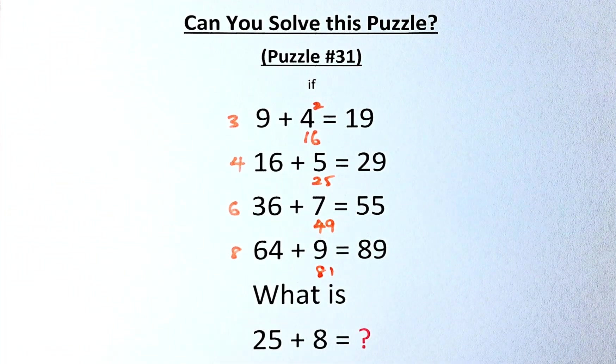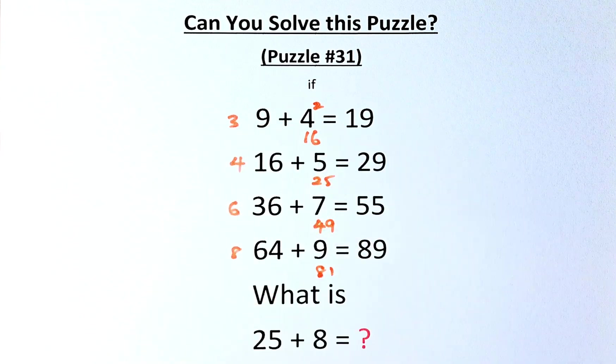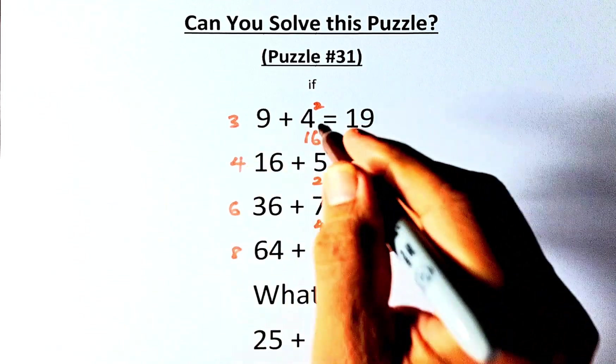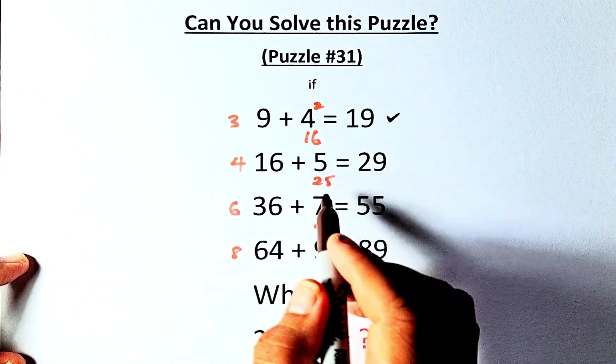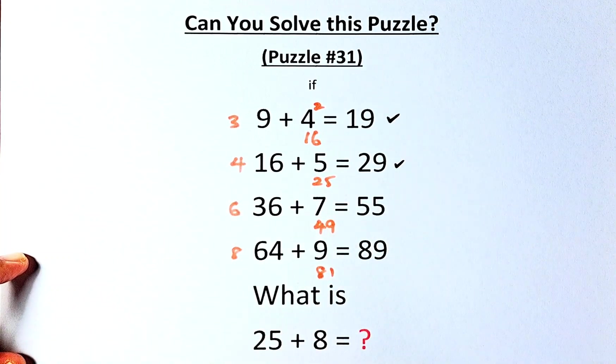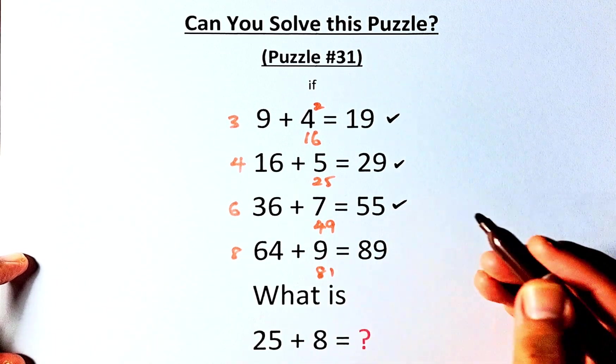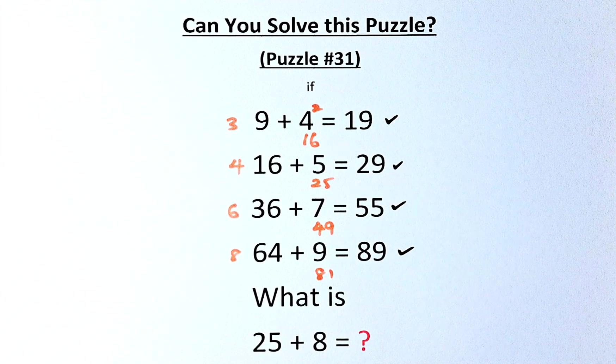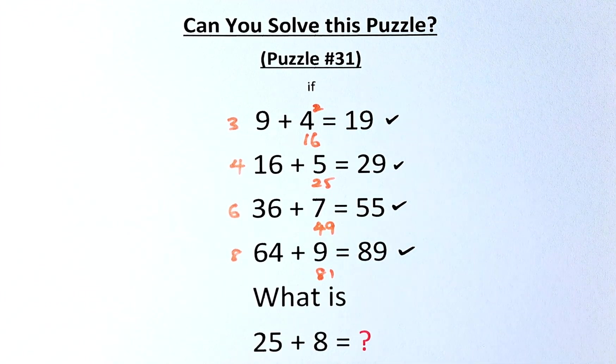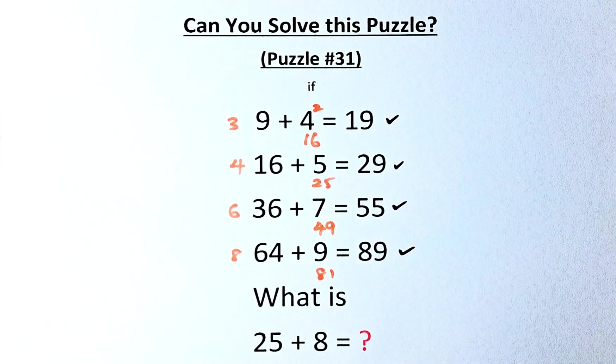So what happened now is that we are going to add the two numbers. 3 plus 16, the square root of 9 and the square of 4, is going to be 19. 4 plus 25 is 29, 6 plus 49 is 55, and 8 plus 81 is 89.